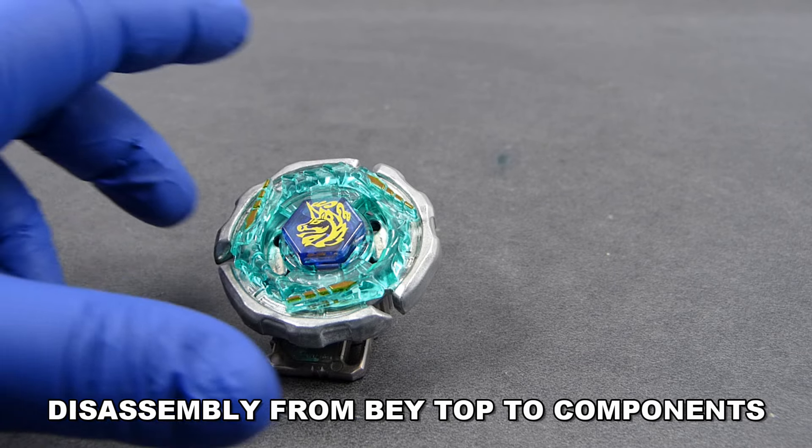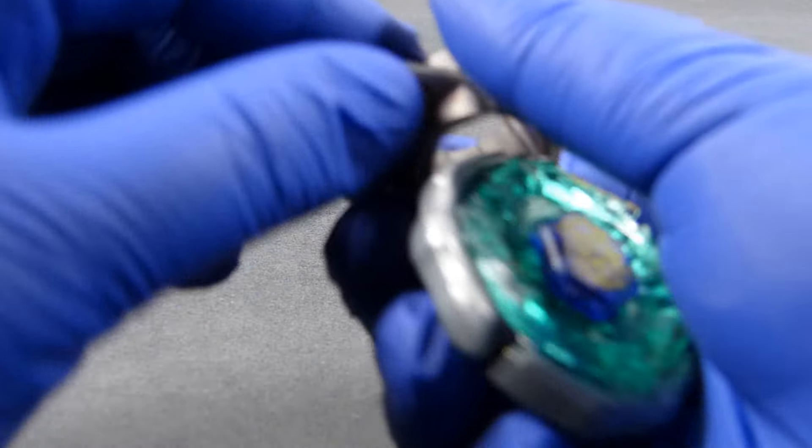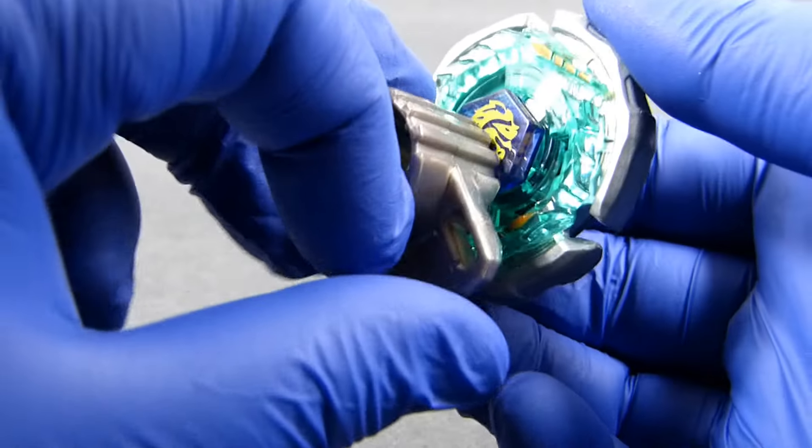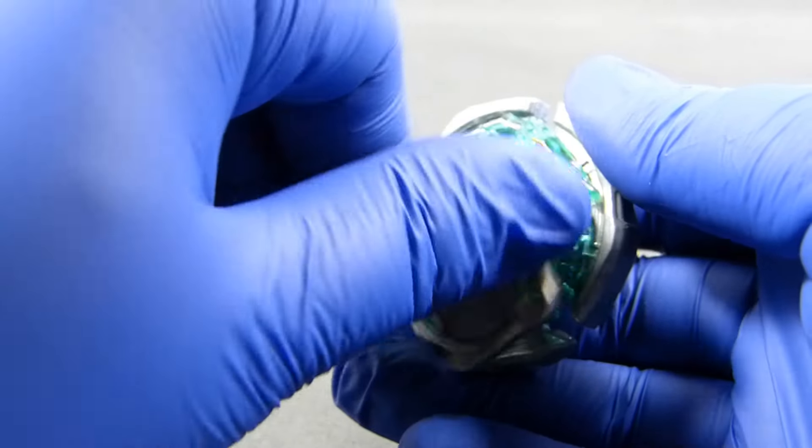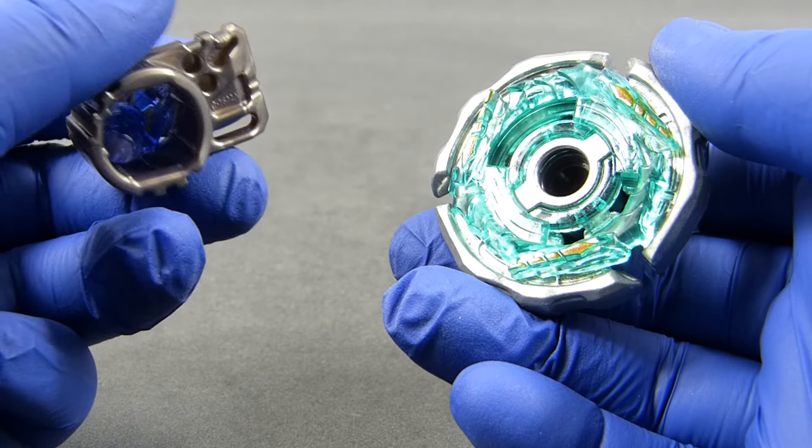So first we take our Bey off the assembly tool, and now we use again this piece with two flat surfaces to unscrew the face bolt from the rest of our Bey. Twist it left until it goes out without any hitch.